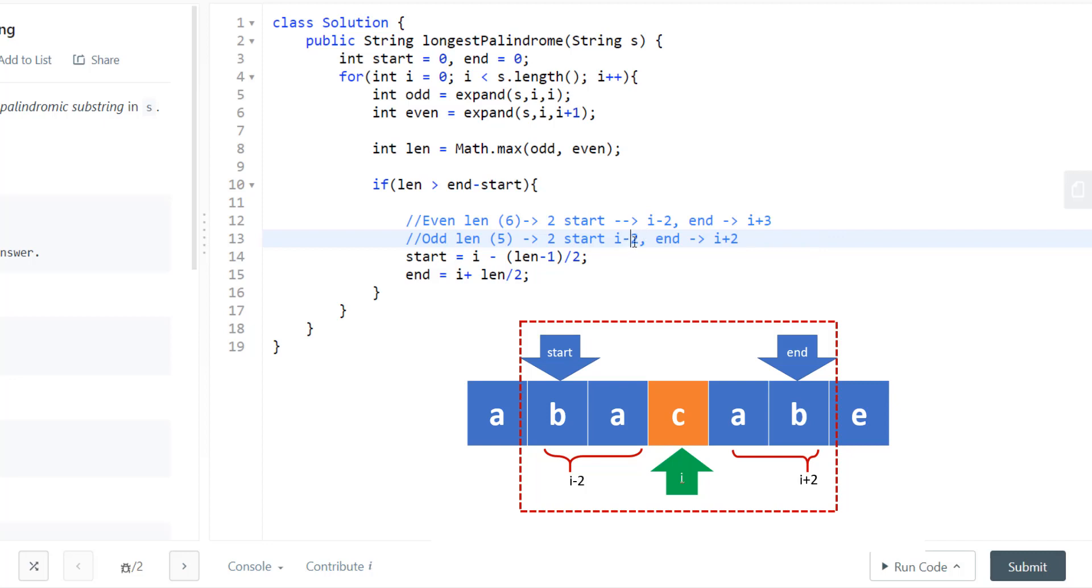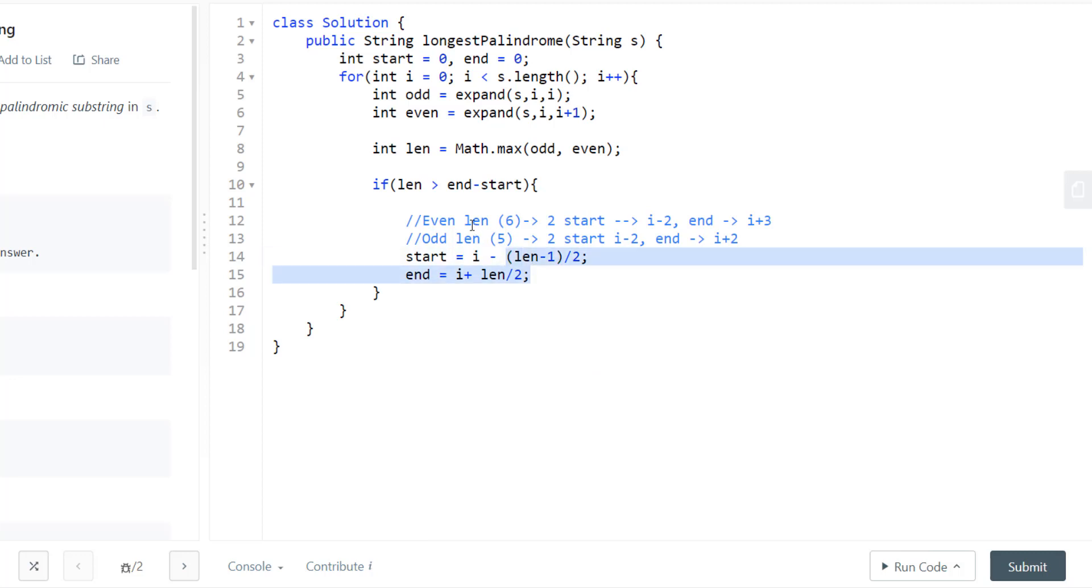If you see here, this 2 is the floor of length by 2 and length minus 1 by 2 or length by 2 will always give me the floor of length by 2. And that's how both even and odd length start and end index are calculated just in one case.